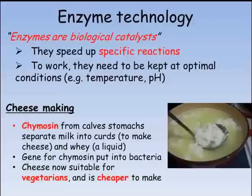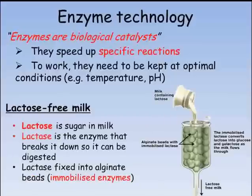Calves produce chymosin because, like all young mammals, they need to be able to break down the proteins in milk. Lactose is one of the main sugars in milk and it is broken down by the enzyme lactase. Unusually, most adult humans can still digest milk because they continue to produce lactase throughout their lives, not just when young. Some people, however, are lactose intolerant, which means they can't produce lactase as an adult.